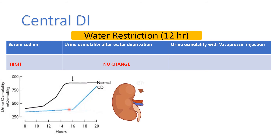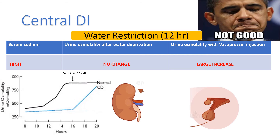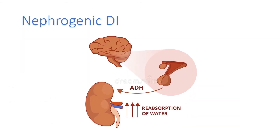The key distinction between central and nephrogenic DI comes when you inject exogenous vasopressin. In central DI, these patients show a large increase in urine osmolality — indicating the deficiency was central. They were not producing enough vasopressin, so when administered exogenously they showed a normal kidney response. Their urine osmolality went up, confirming the pituitary is the problem.